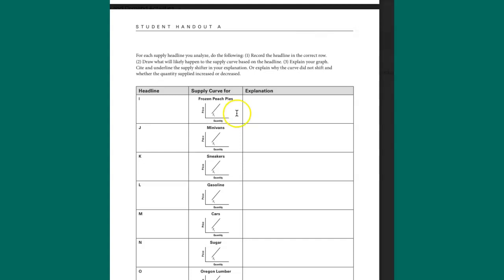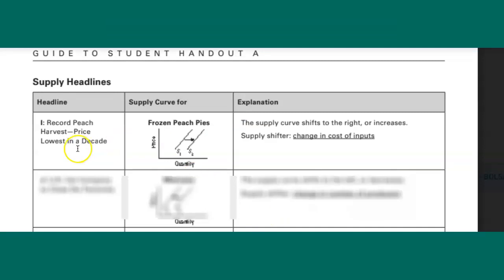So let's see what they say on the answer key. So just as I've indicated, you put your record peach pie harvest is the headline, which is the lowest price in a decade, and then your explanation is listed here. The supply curve shifts to the right or increases, and then what's the supply shifter or factor that changes that? It's called change in cost of inputs, and that's where you have it.